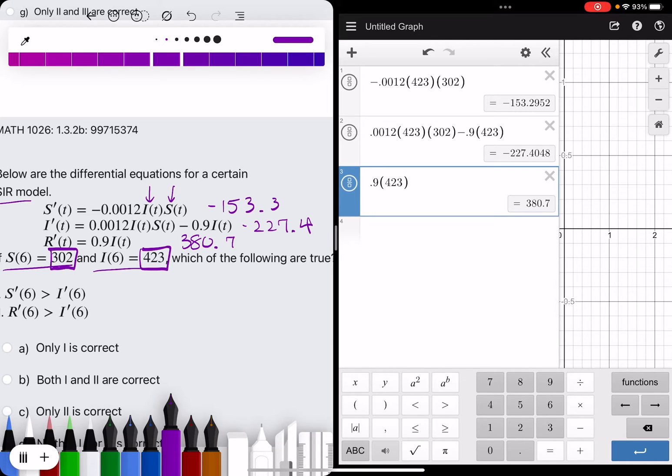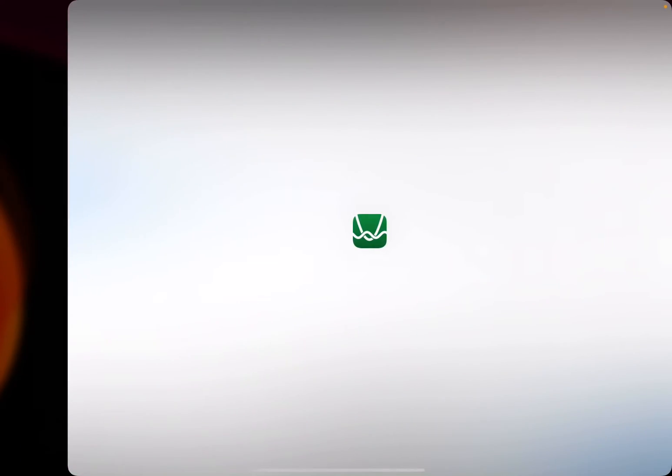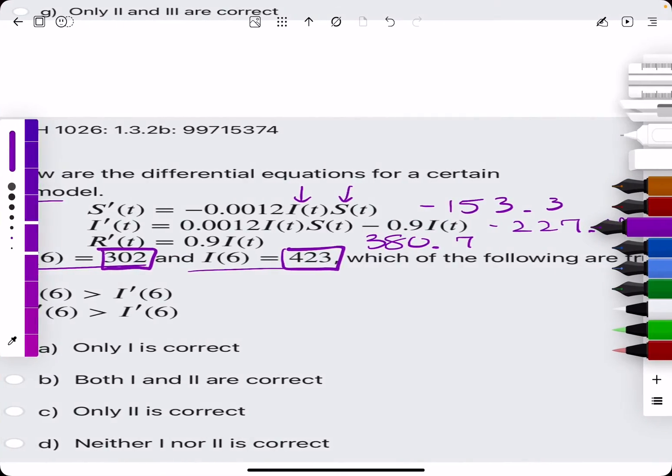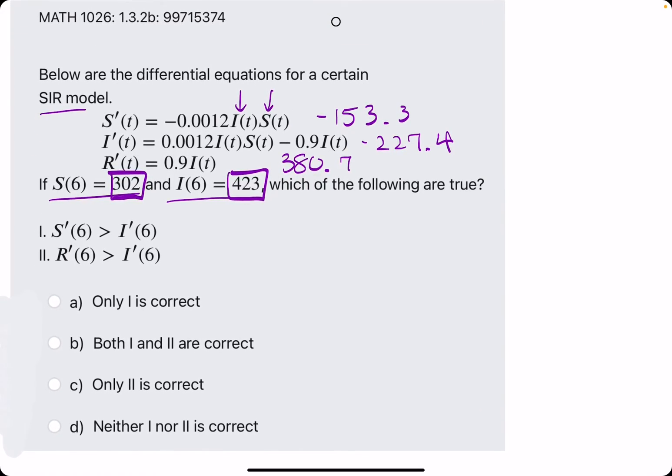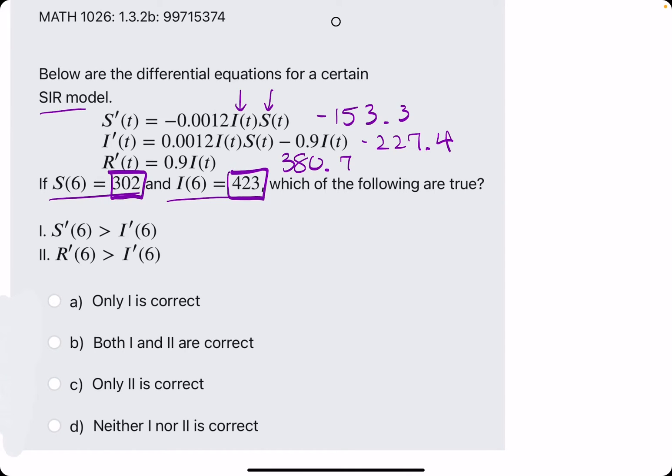Alright, so we have our values. Let's go ahead and get out of this. Alright, back at it. Pretty neat. Alright, so we have S prime, I prime, and R prime.